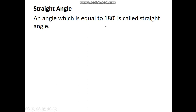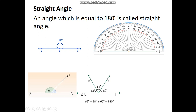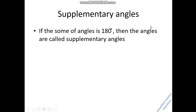The first definition is straight angle. An angle which is equal to 180 degrees is called a straight angle. A straight line always measures 180 degrees — if you place a protractor on it, it will measure 180 degrees. A straight line can be divided into one, two, or more angles, but the sum of these angles is always equal to 180 degrees. These are called supplementary angles. The angles may be above or below the line. So, if the sum of angles is 180 degrees, they are called supplementary angles.